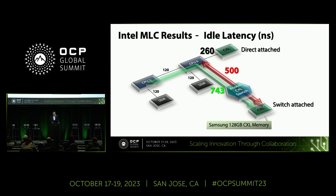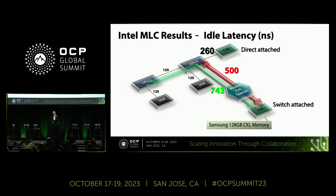The first result: direct-attached CXL memory latency is 260 nanoseconds, and switch-attached is 500 nanoseconds. The request travels from the CPU to the retimer, through the CXL cable, to the switch, to the CXL memory controller, to the DDR, and all the way back. I know it's larger than people's expectations, but all of the retimer, switch, and CXL memory modules are in pre-production stage, so we haven't yet diagnosed where the latency is coming from. We will retest in Q2 next year with production units.